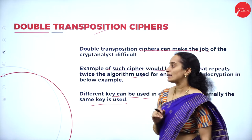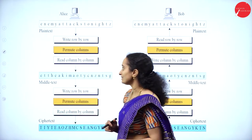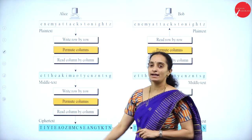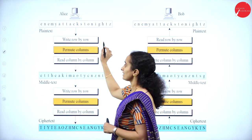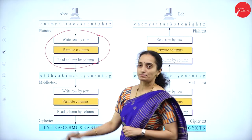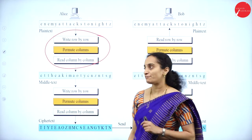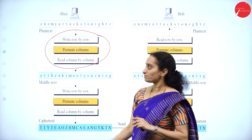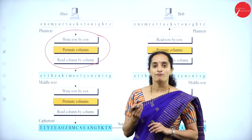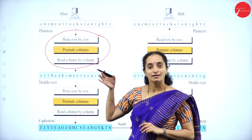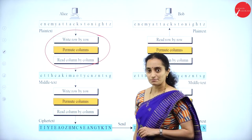Let's look at how the algorithm is executed twice. Here we have the same example: 'enemy attacks tonight.' To generate the double transposition cipher, the first step is to execute the columnar transposition cipher one time using three steps: write row by row, permute columns, read column by column. This gives us a middle-level ciphertext — it is not the ultimate ciphertext, but an intermediate result.